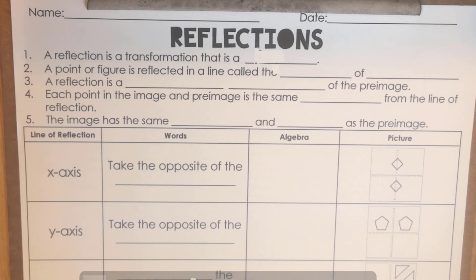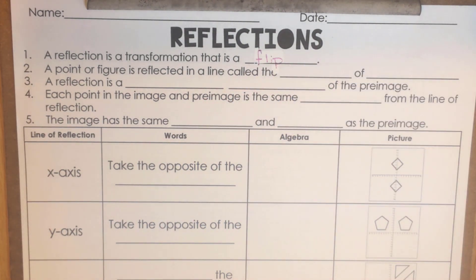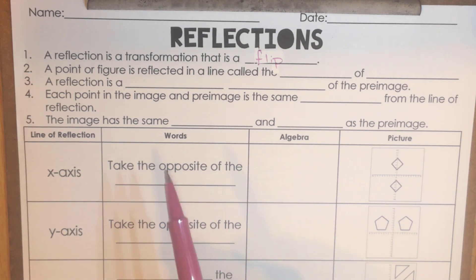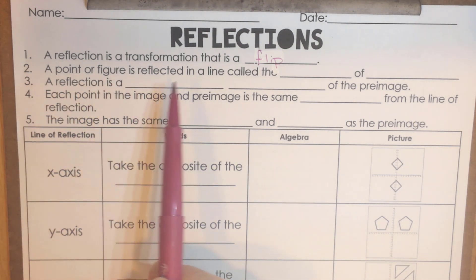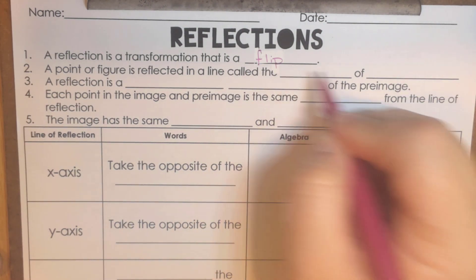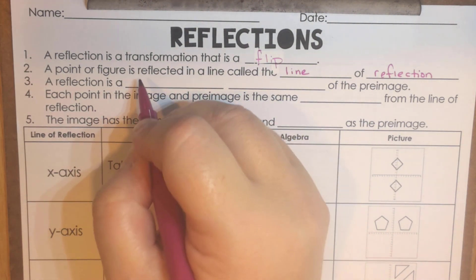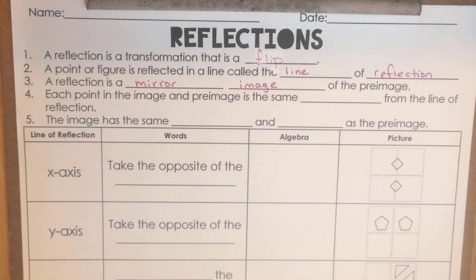Let's begin with some definitions. A reflection is a transformation that is a flip. If you think about when you are doing things with your phone and the handwriting is backwards, that would be another example of a reflection. A point or a figure is reflected in a line called the line of reflection. A reflection is a mirror image of the pre-image.